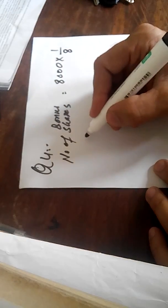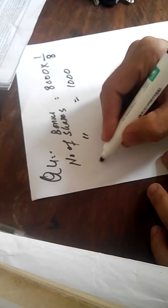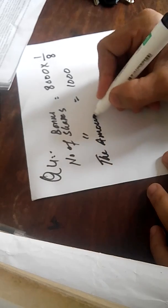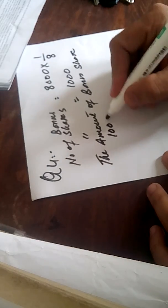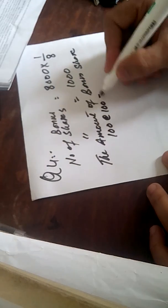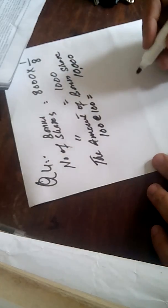The subscribed capital is 8,000 shares, and we will allow one bonus share for every eight shares. So the number of bonus shares would be 1,000. The amount of bonus shares is 1,000 at the rate of 100 each, which equals 100,000. Now let's pass the journal entry.